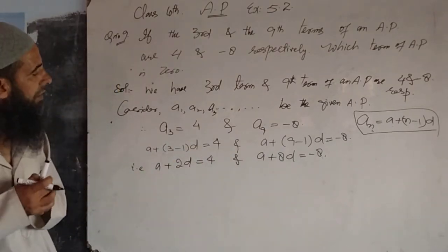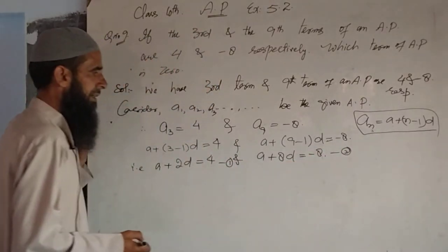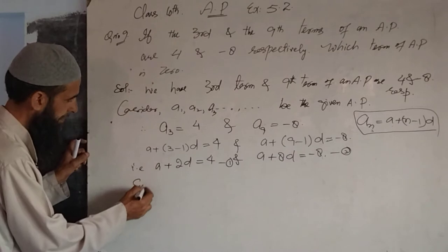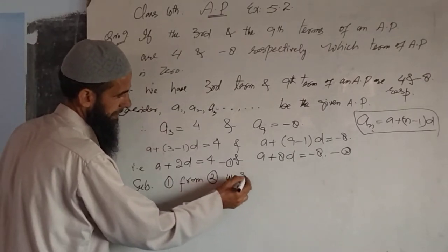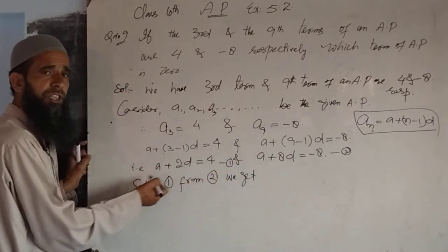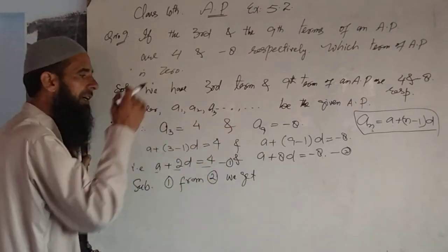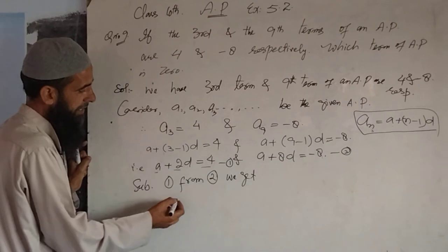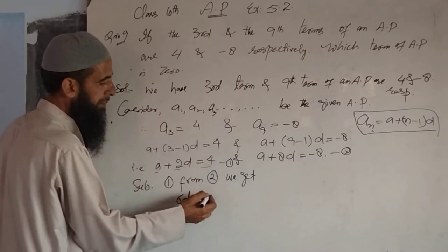Taking the first equation as a + 2d = 4 and the second as a + 8d = minus 8, we subtract the first from the second. The a terms cancel out, and we get 6d = minus 8 minus 4, which gives 6d = minus 12.